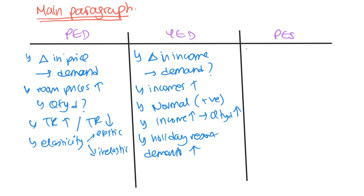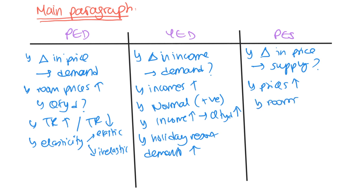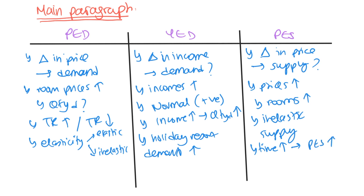Lastly for PES — this is about how a change in price affects supply. For a holiday resort, we're thinking about whether, if there's an increase in price, the resort is able to respond by increasing the number of rooms available. This is probably going to be inelastic in supply, because it's not easy to expand the number of rooms in a short period of time. As time goes on PES would increase since you can expand over time, but in the short run you're likely to be inelastic.